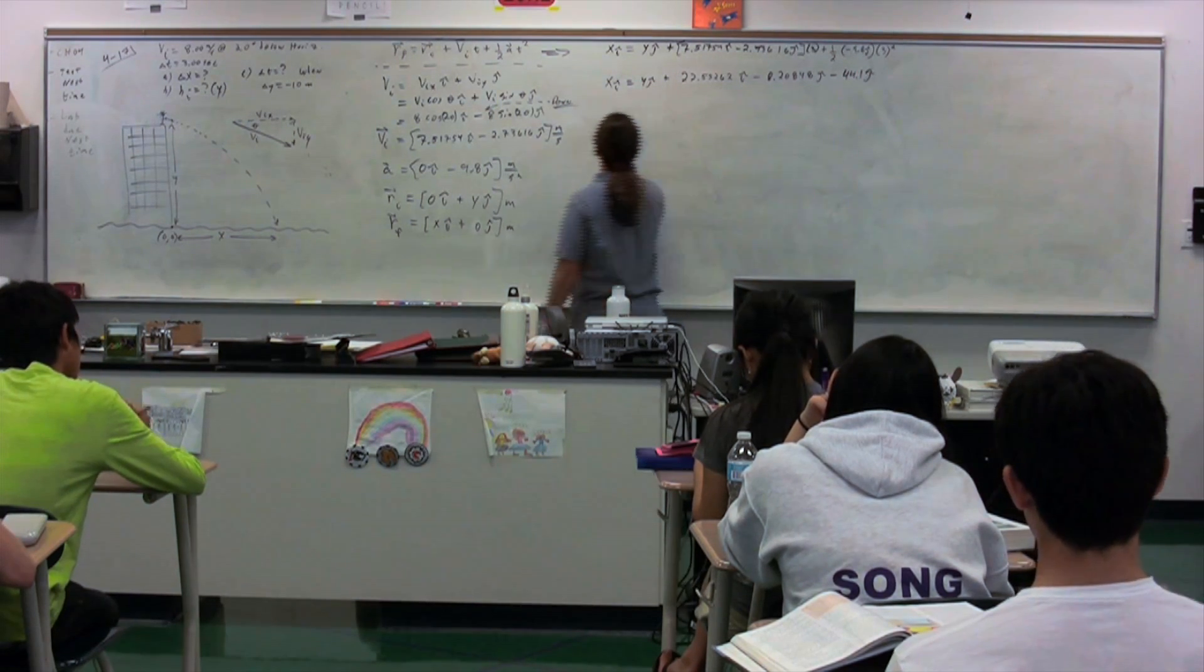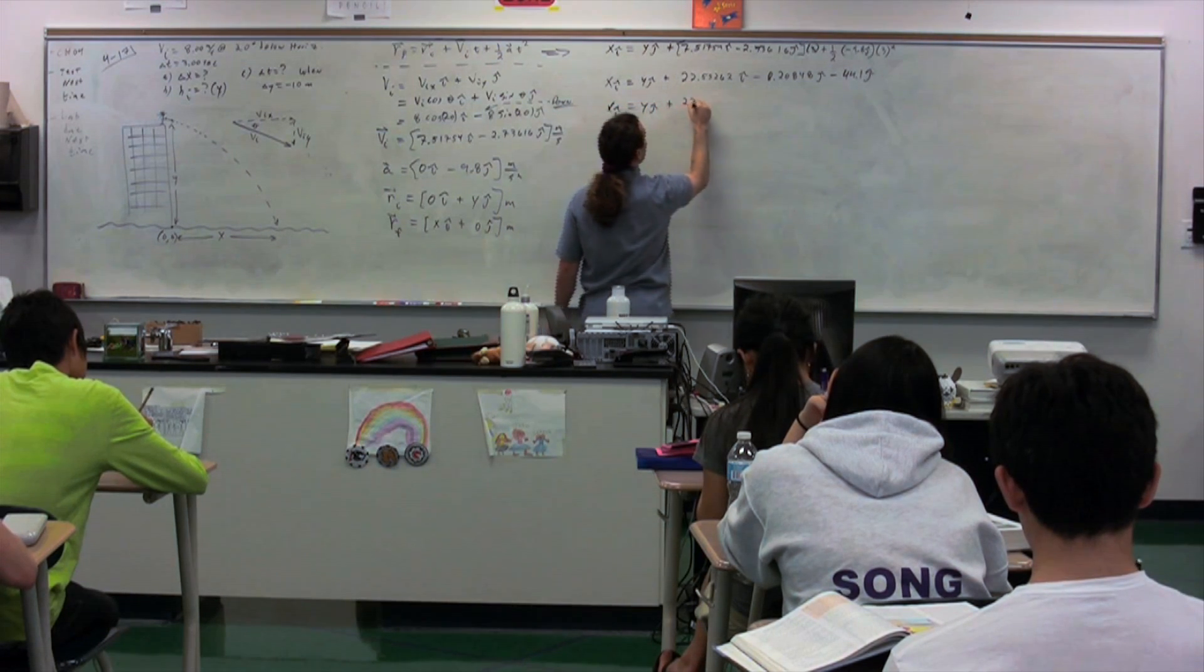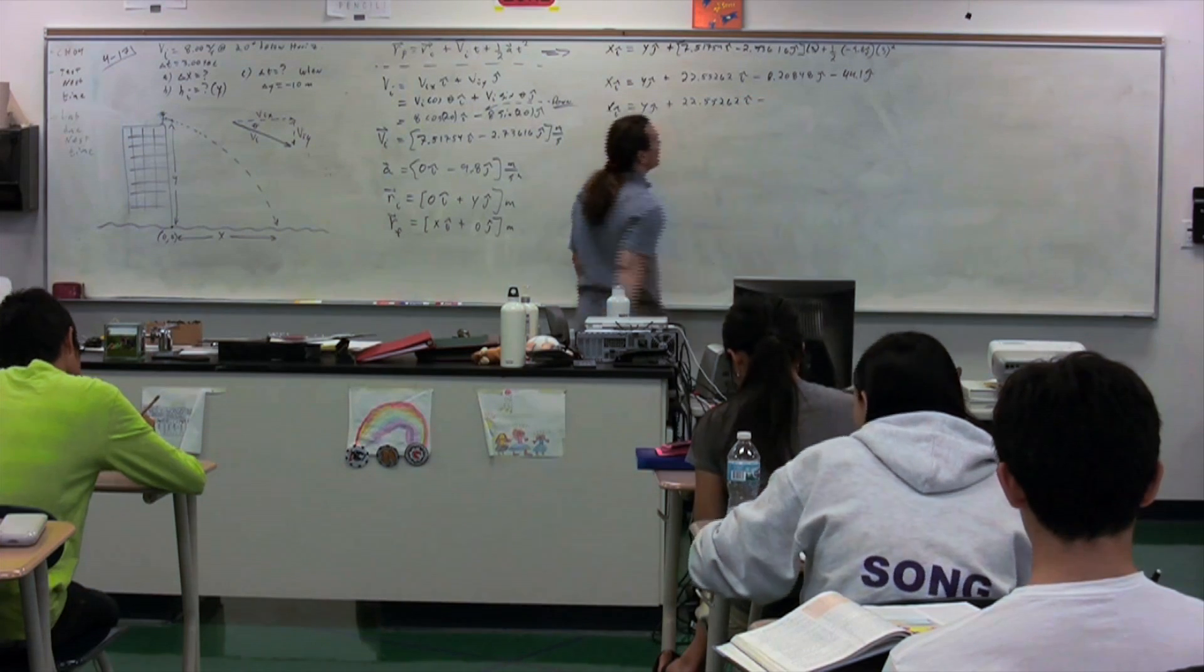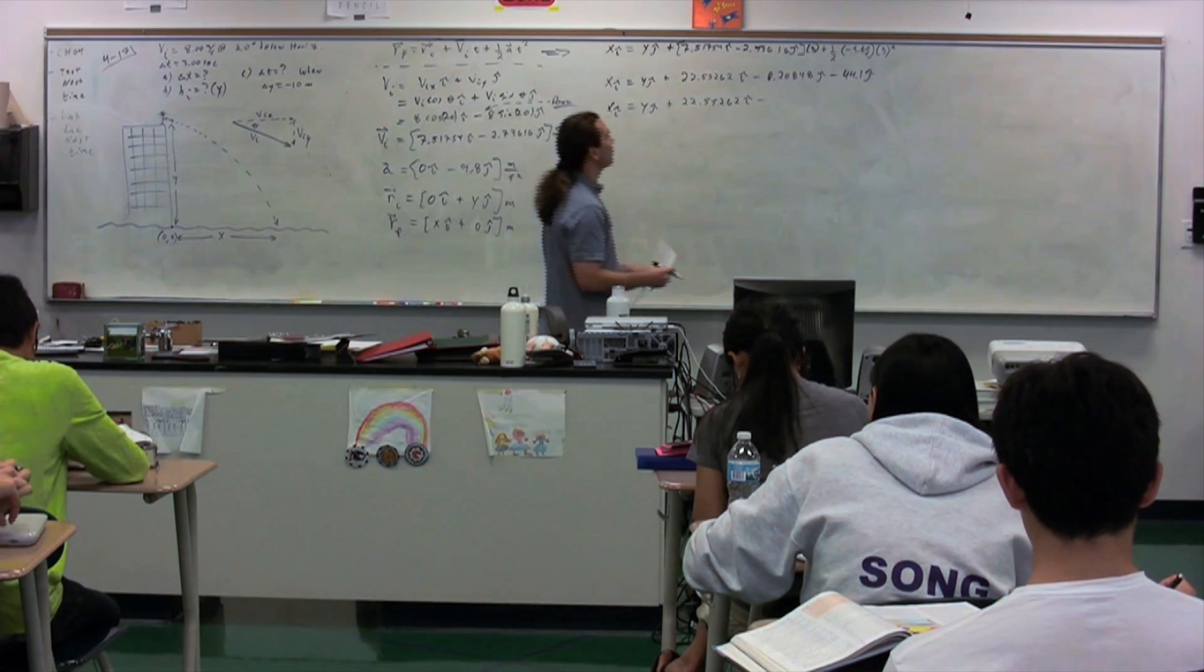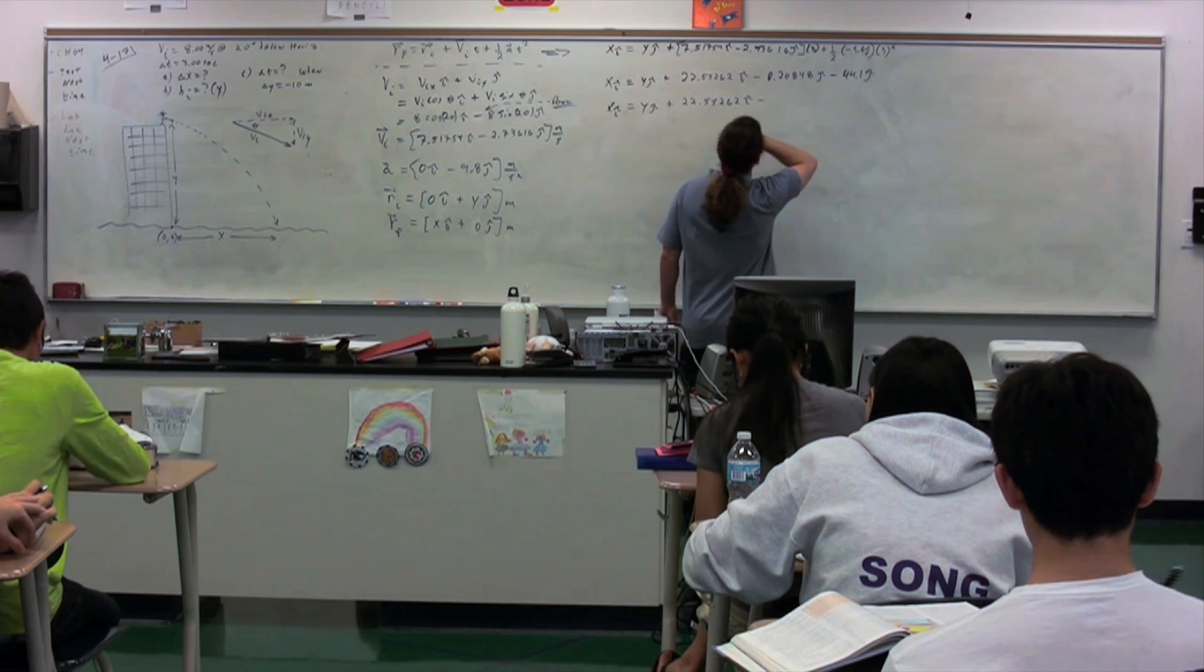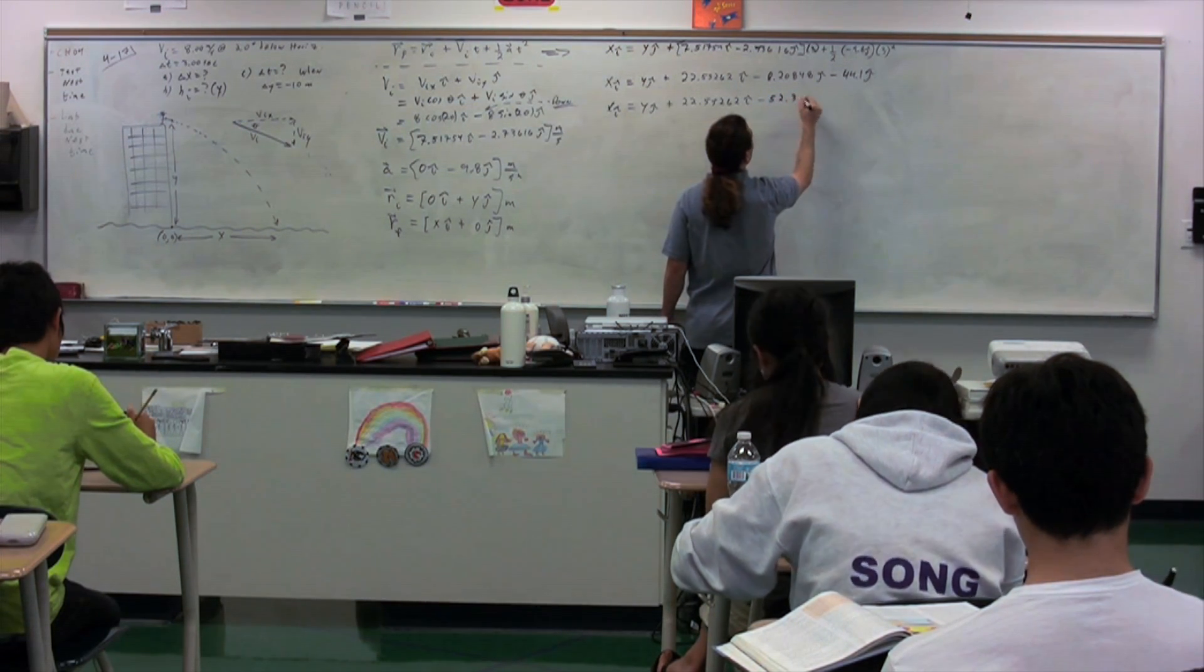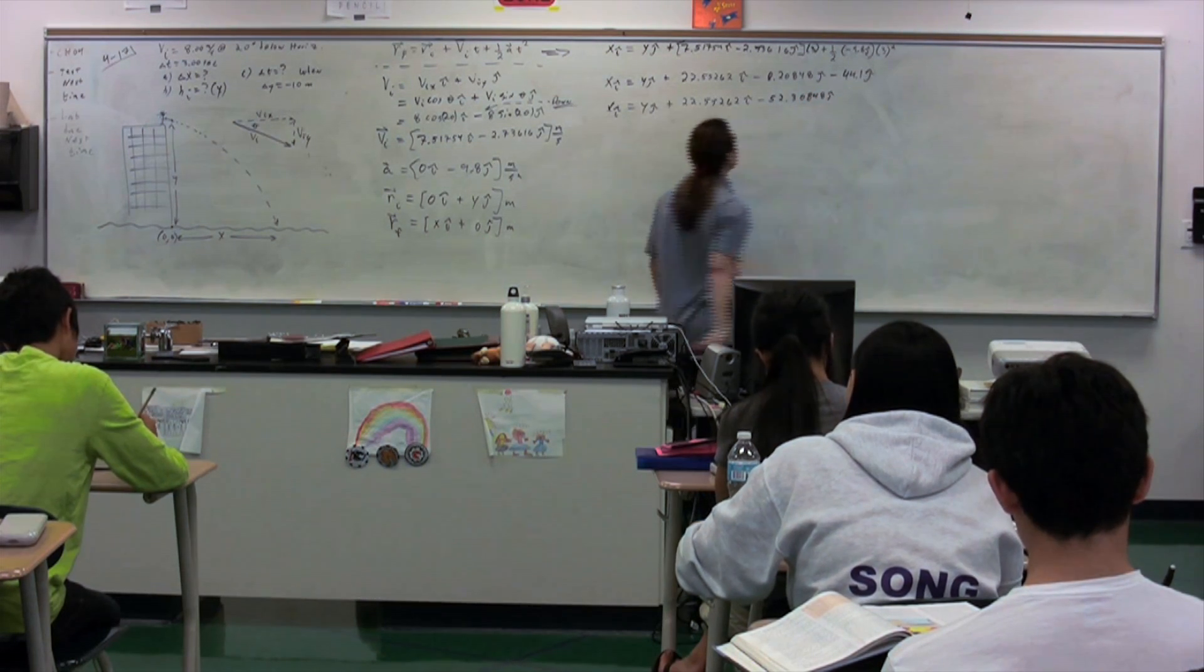All right, so now we have x i equals y j plus, and we still have 22.55262 i, but now we have something different for our j. Combine those, please. Negative 52.30848. I'll put 848. That's fine. Okay.